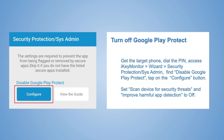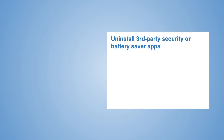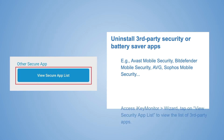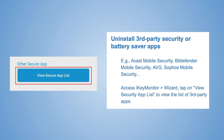Turn off Google Play Protect. Get the target phone in hand, dial the PIN to access iKey Monitor, tap on Wizard, go to 'Security Protection,' find 'Disable Google Play Protect,' tap on the Configure button, then set 'Scan device for security threats' and 'Improve harmful app detection' to off.